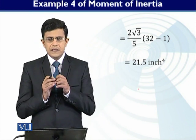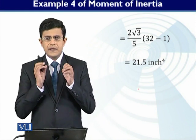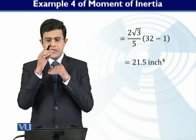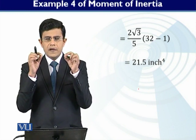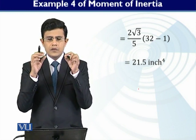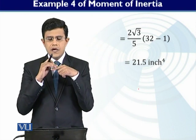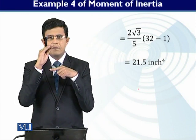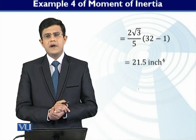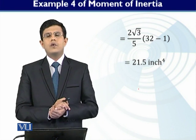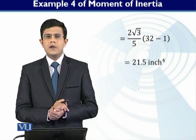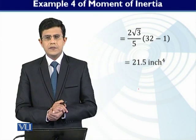Basically, what you have done is: consider an elementary strip from the surface area, calculate the moment of inertia of that strip, and then integrate over the entire surface area. Finally you get the moment of inertia of the whole surface area. This is the end of the module — thank you very much.